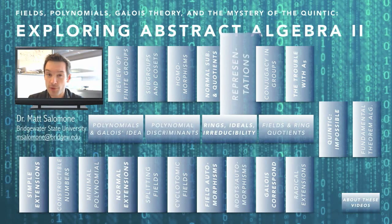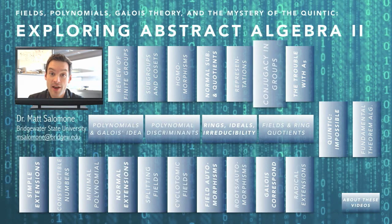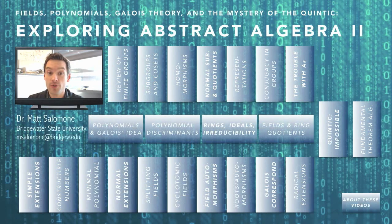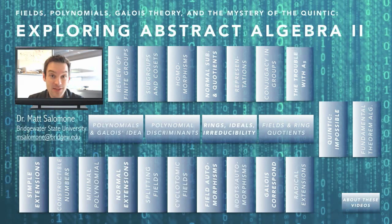We'll cover representations of groups, which is not always a topic covered at this level, but I think it's important to motivate what comes next. Then we look at the idea of what conjugacy inside a finite group is, what it can do for us, and how we can use those ideas to find out that there is some trouble with the alternating group A5 that makes it different from the alternating groups on fewer symbols.